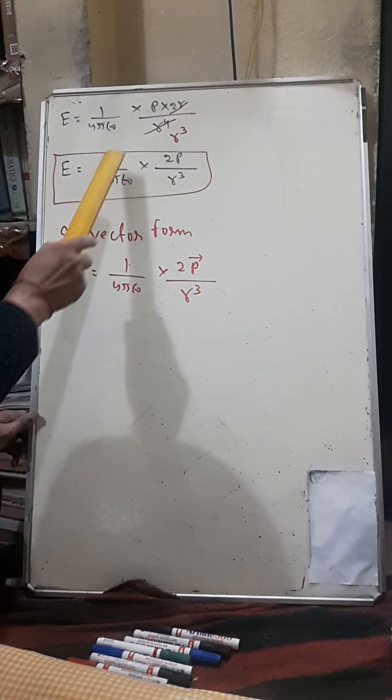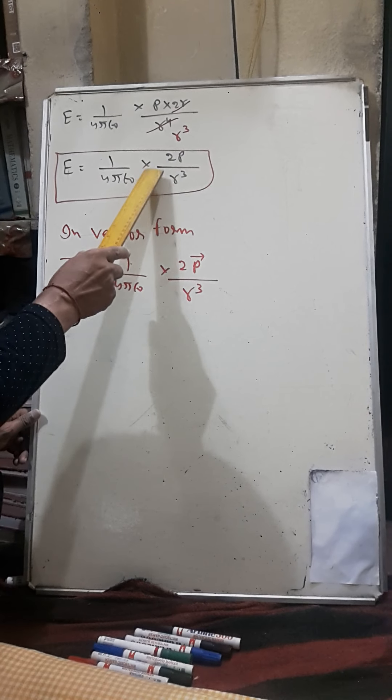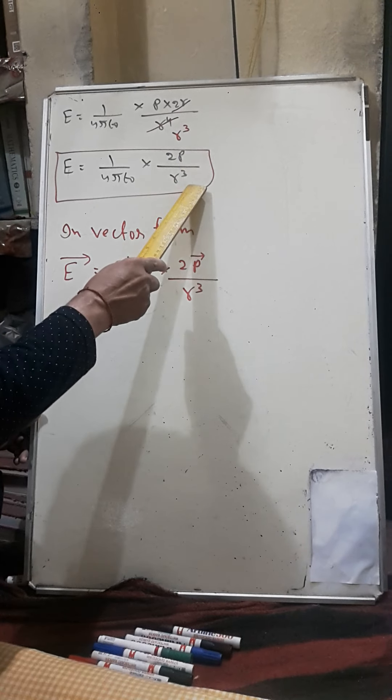So my final result is E is equal to 1 upon 4π epsilon naught times 2P upon r cube.